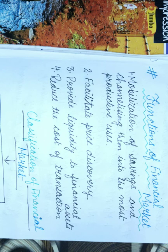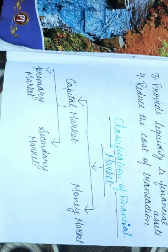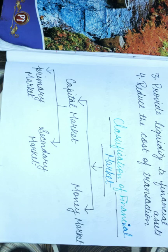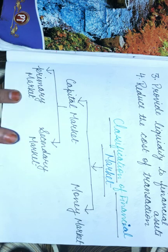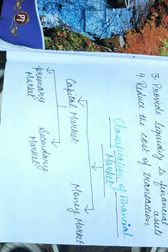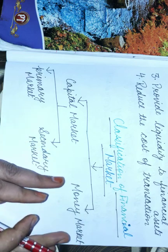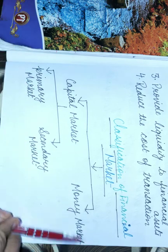Next we are going to study about classification of financial market. Financial market ko hum do type mein classify karte hain — pehla hai capital market aur doosra hai money market. Capital market is again classified into two subtopics: first is primary market and second is secondary market. We are going to study each topic in detail. Abhi hum money market se start karenge kyunki yeh thoda chhota topic hai. Capital market ko hum agle video mein karenge — aaj ki video mein hum capital market complete karenge.